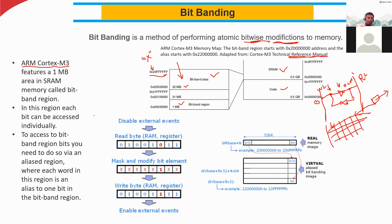To access the bit band region bits, you go via an alias region where each word in this region is an alias to one bit in the bit band region. If you have already stored a word, one word will have many bits, and each row indicates one word.